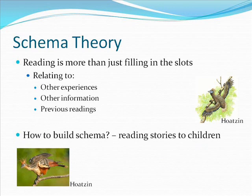Although activating schemata is essential in reading, reading is more complex than simply filling in the slots. As they transact with text, proficient, active readers are constantly relating what they are reading to other experiences they have had or other information in the text they have read and text previously read. Their interest in the text plays a powerful role in the linkages that they construct. A student captivated by the idea that a bird has claws on its wings might relate this text to passages or a TV show about unusual animals.